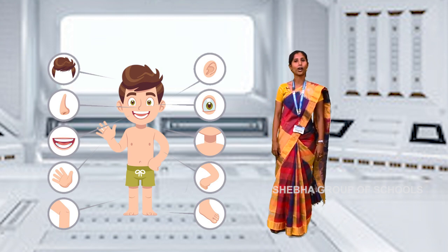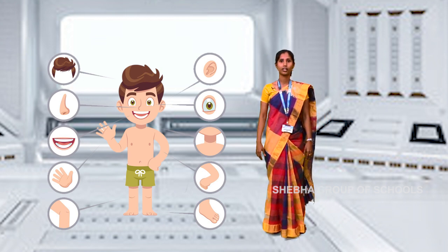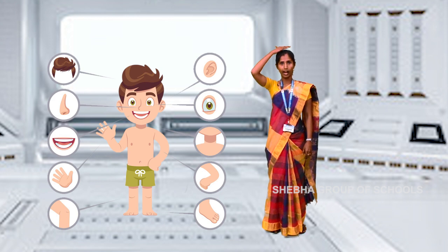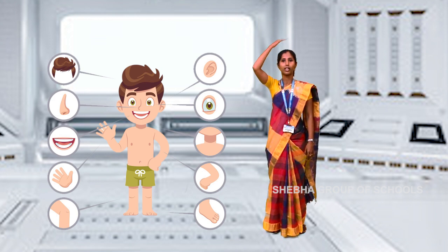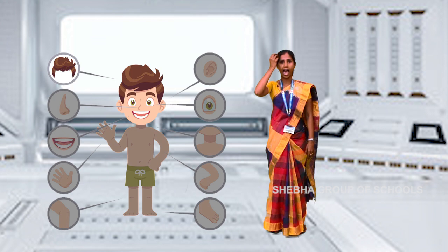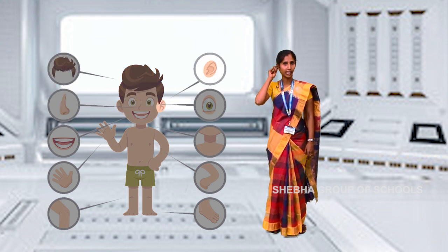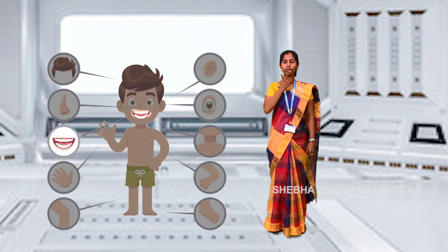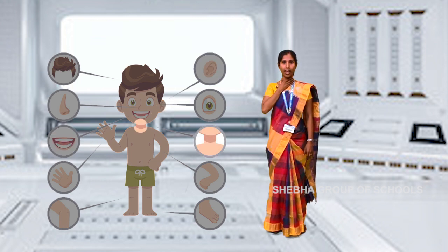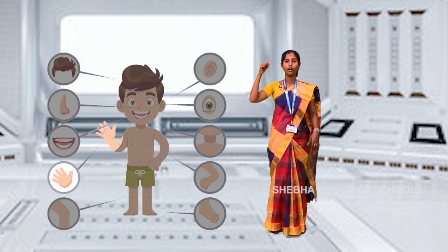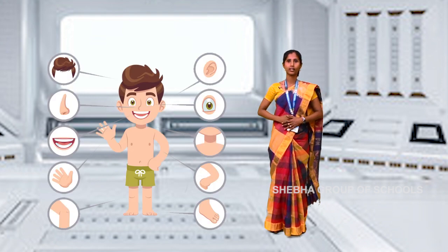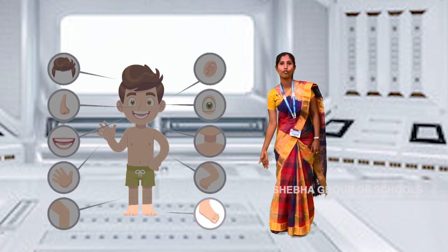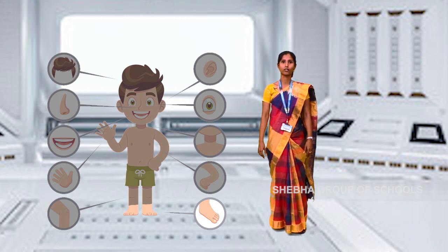What are the parts of the body? Head. Let us touch your head. Eye. Nose. Ear. Mouth. Neck. Hand. Fingers. Elbow. Stomach. Leg. Foot. Toes.